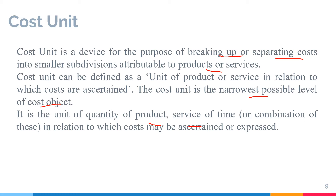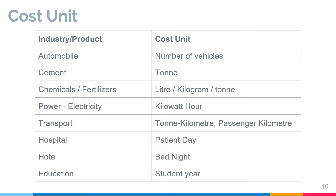Examples of cost units: for the automobile industry, the cost unit is number of vehicles; for cement, it is tons; for chemicals or fertilizers, liters, kilograms or tons; for power, kilowatt hours; for transport, ton-kilometer or passengers per kilometer; for hospital, patient per day; for hotel, bed per night; and for education, student per year.